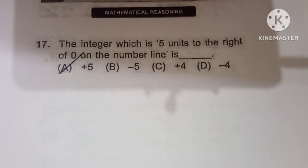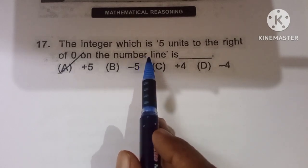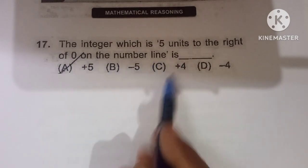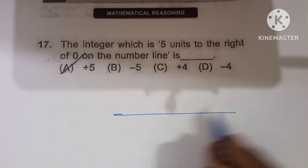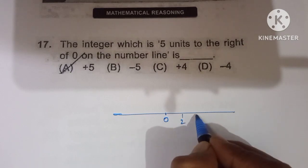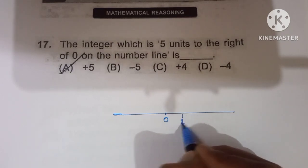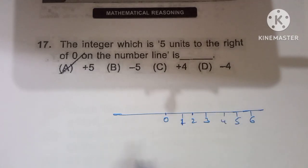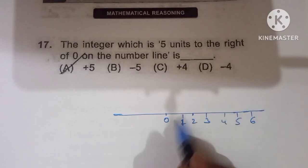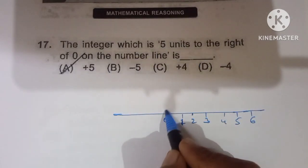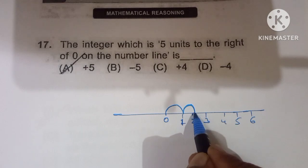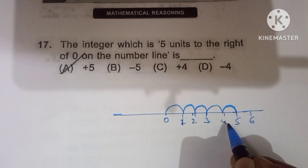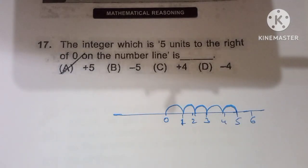Seventeenth question: the integer which is 5 units to the right of 0 on the number line. Moving right from 0: 1, 2, 3, 4, 5 — we get plus 5. So option A is the correct one.